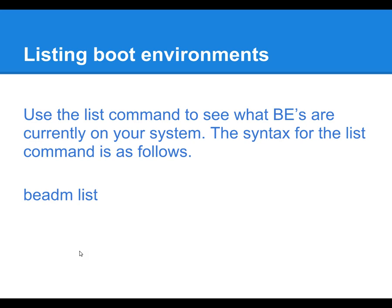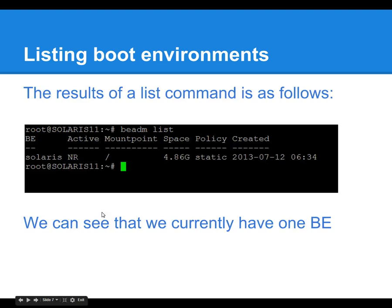To list the boot environments you currently have on your system, you type beadm list — that is the syntax. Here's an example of beadm list. We can see that we currently have one boot environment, Solaris, and the boot environment is currently active, which is represented by N, and it will be active upon the next reboot, which is represented by R.